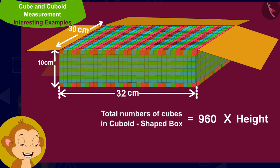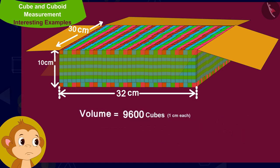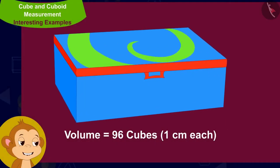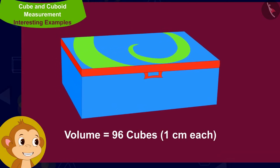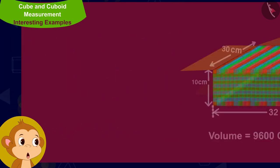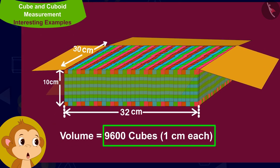The box will have a total of 960 times 10 — that is 9,600 cubes of dimension 1 centimeter each. In other words, the volume of this cuboid shaped box is equal to 9,600 centimeter cubes. The volume of a compass box is equal to 96 centimeter cubes, and the volume of this cuboid shaped box is equal to 9,600 centimeter cubes.